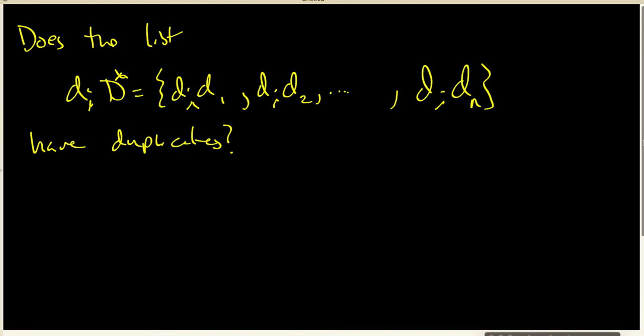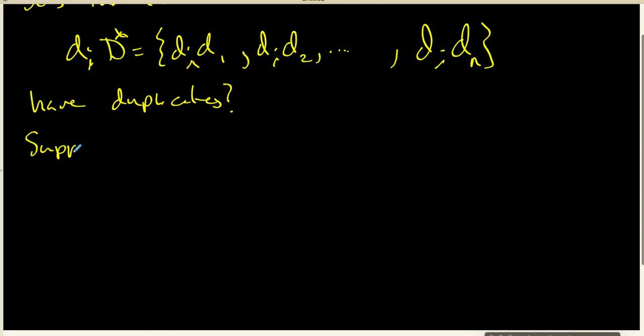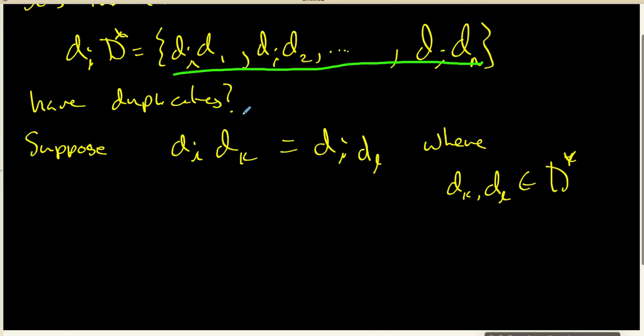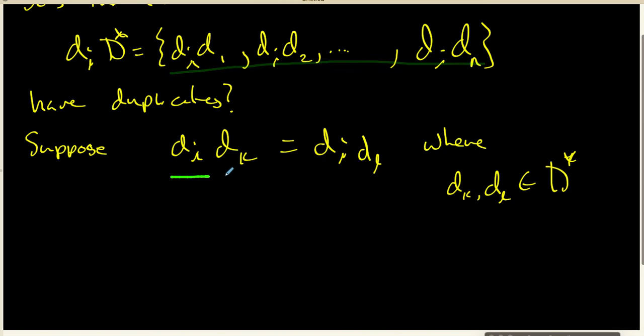Let's suppose for a minute that it does. Let's suppose that D_i times D_k is equal to D_i times D_l, where all I know about D_k and D_l is that they are in D*. So one of these elements equals D_i times D_k and another equals D_i times D_l, and we're simply assuming they're the same thing.